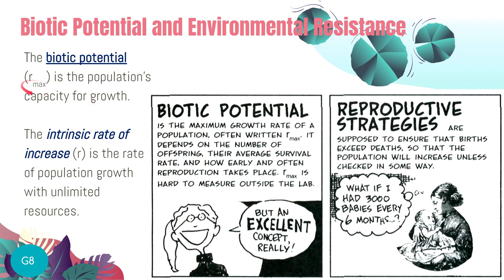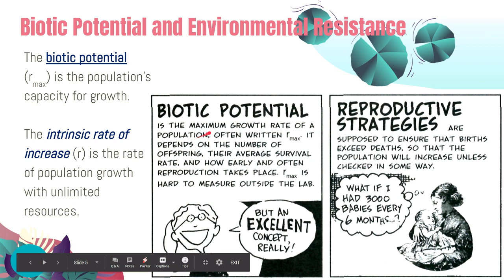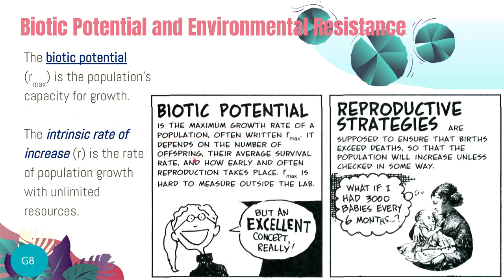R-max asks: how big can a population grow with unlimited resources? Biotic potential is the maximum growth rate. It depends on the number of offspring, their average survival rate, and how early and how often reproduction takes place.